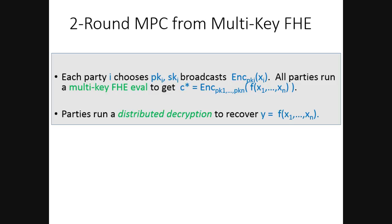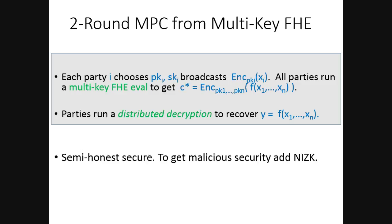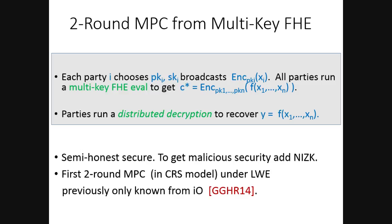With multi-key FHE we get a really simple two-round protocol for multi-party computation. In round one, each party chooses its own public key/secret key pair, uses the public key to encrypt its input xi, and broadcasts the ciphertext. At the end of round one, all parties see all ciphertexts and each party can run the homomorphic evaluation procedure to get a ciphertext C* which encrypts the output of the computation under all the public keys. In round two, the parties run a distributed decryption procedure to decrypt and get the output. This protocol is secure against semi-honest corruptions; for malicious security you add non-interactive zero-knowledge proofs. This is actually the first two-round multi-party computation protocol — at least in the common random string model — that you can prove secure under a nice assumption like LWE. Previously we only knew how to do this from indistinguishability obfuscation.